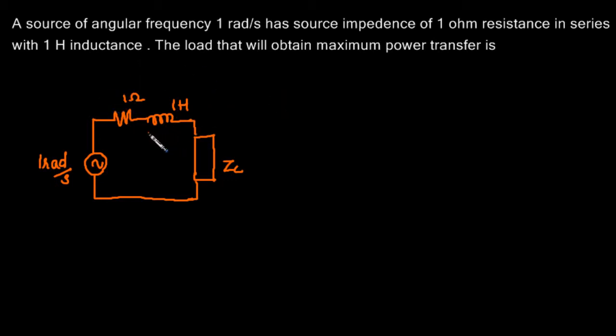The impedance of the source, let's say ZTH, will be 1 plus jωL. 1 is the resistance plus the impedance offered by 1 henry will be jωL where ω is 1 and inductance is 1. So ZTH is nothing but 1 plus j. Now we know ZL must be conjugate of ZTH for maximum power transfer.